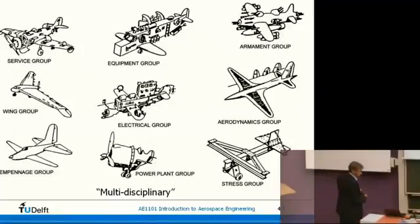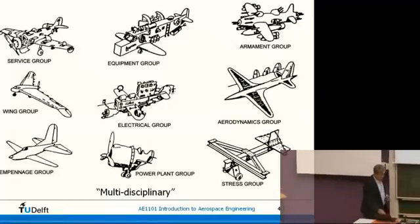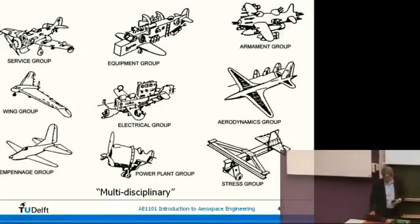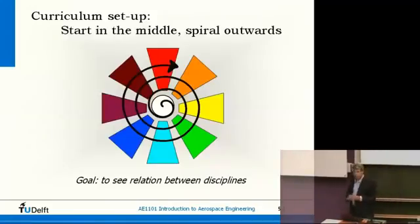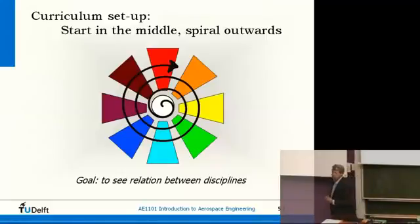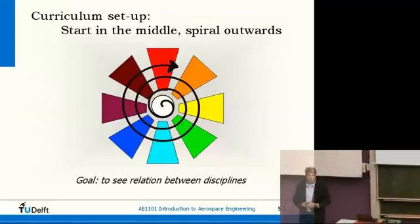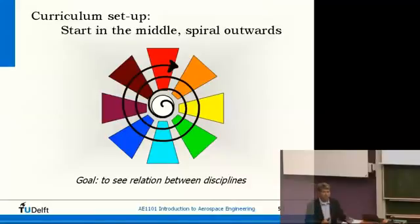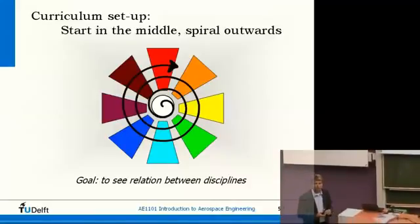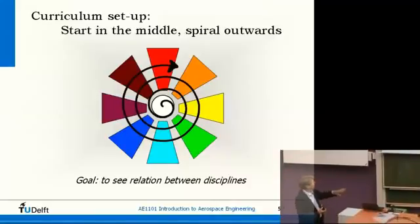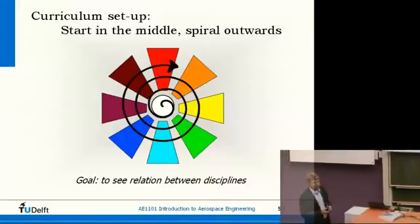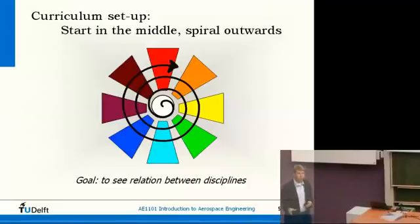So how do we do this in this lecture? The idea is to start in the center — start with the aircraft itself, basically look at all the disciplines. That's what module AB is for. And then later, within the course, you will get different modules on different sub-disciplines.